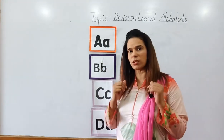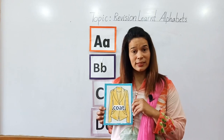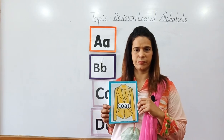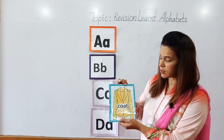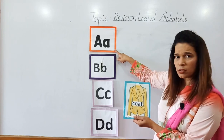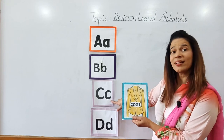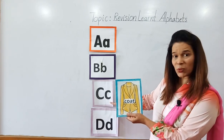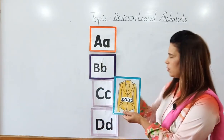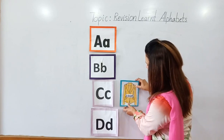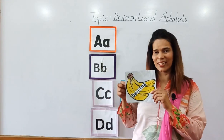I will show you a picture and you will tell me which sound the picture starts with. Now what is this? This is a coat. So coat starts with which letter sound? Not A sound, not B sound — coat starts with the C sound. We will paste coat with the C sound.